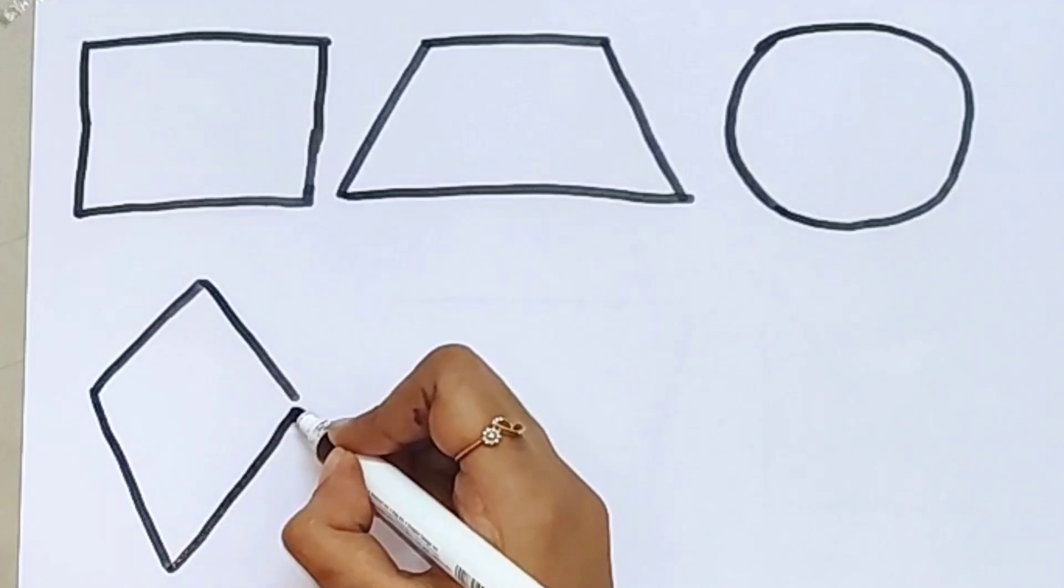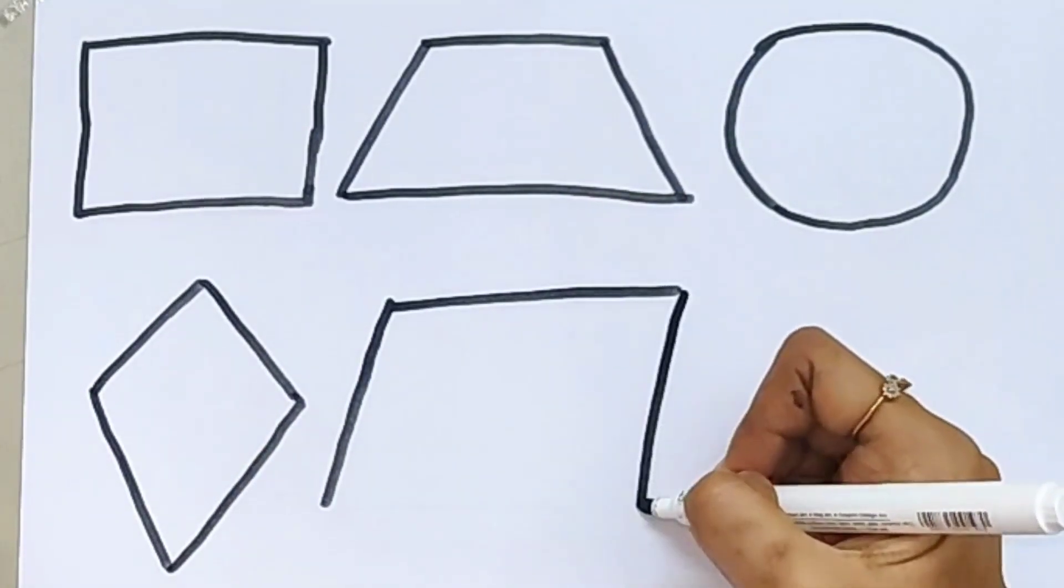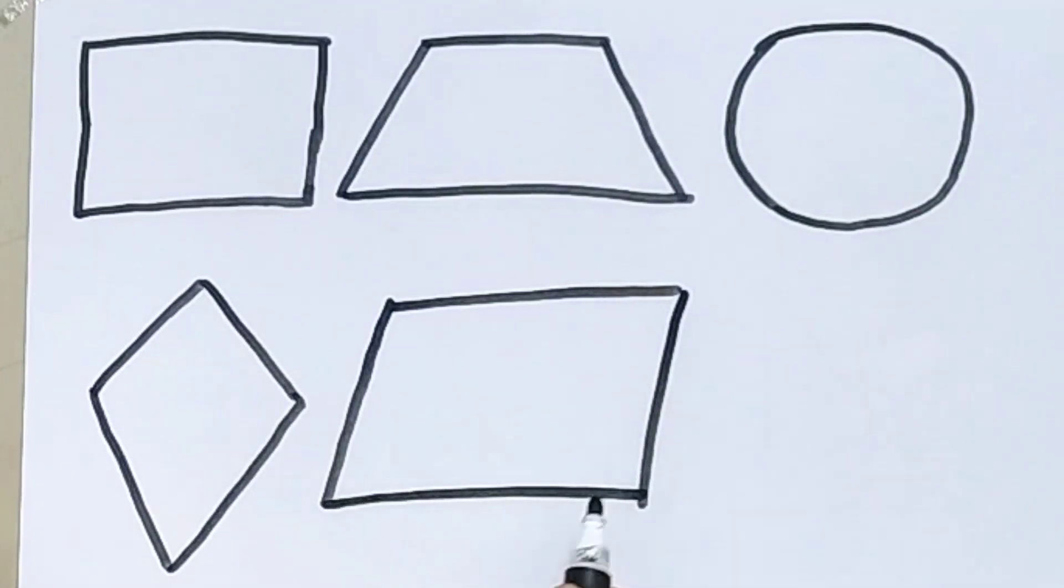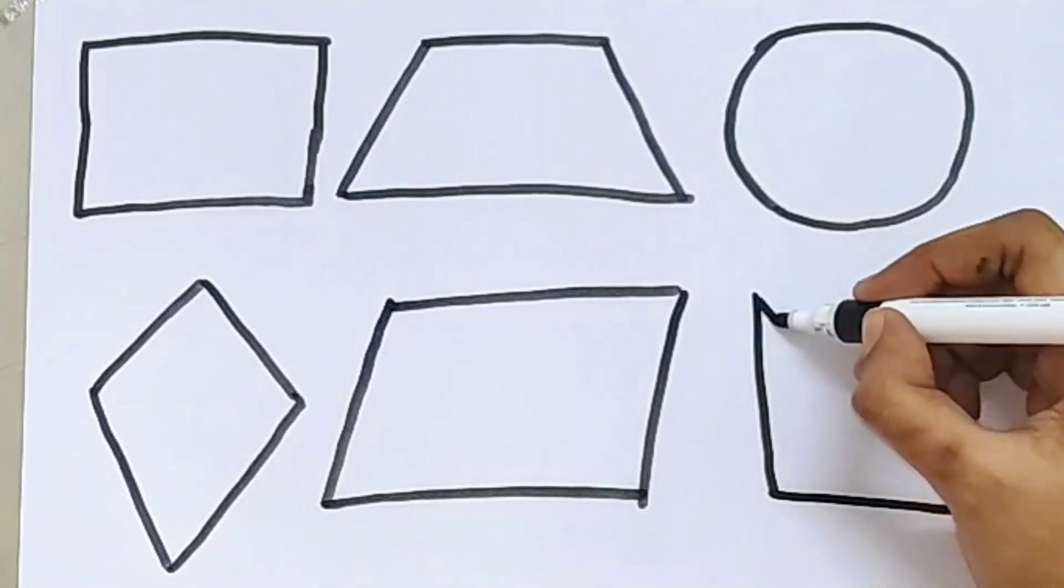This is a kite shape. What shape is this? This is a parallelogram, this is a right triangle.